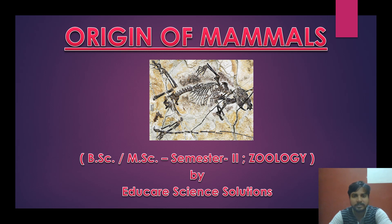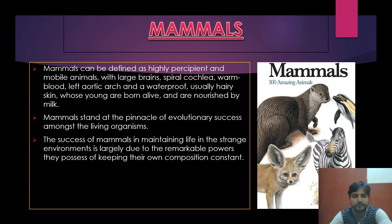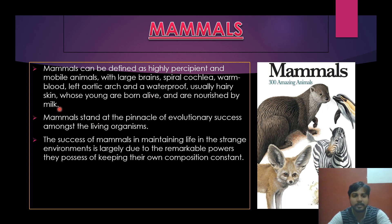Welcome back to Educator Science Solution. Today we are going to discuss the topic of origin of mammals — an important topic not only for BSc but for MSc as well, coming under semester 2 zoology. Mammals can be defined as highly evolved, mobile animals with large brains, spiral cochlea, warm-blooded, left aortic arch, and a waterproof usually hairy skin, whose young are born alive and nourished by milk.